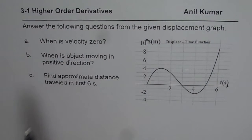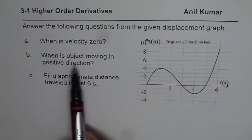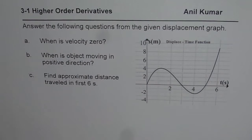When is the velocity 0? When is the object moving in positive direction? And part C is find approximate distance travelled in first 6 seconds. So let's see how to answer these questions.